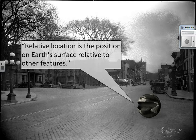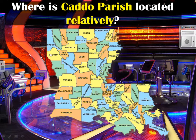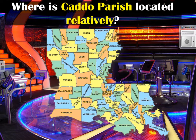Relative location is where something is in relation to other features. For example, where is Cato Parish in relation to other things? You would say that Cato Parish's relative location is north of DeSoto or west of Bossier. In Georgia terms, you might say Georgia is north of Florida, or that Gwinnett County is east of Fulton County. Those are the types of relative location examples you would use.